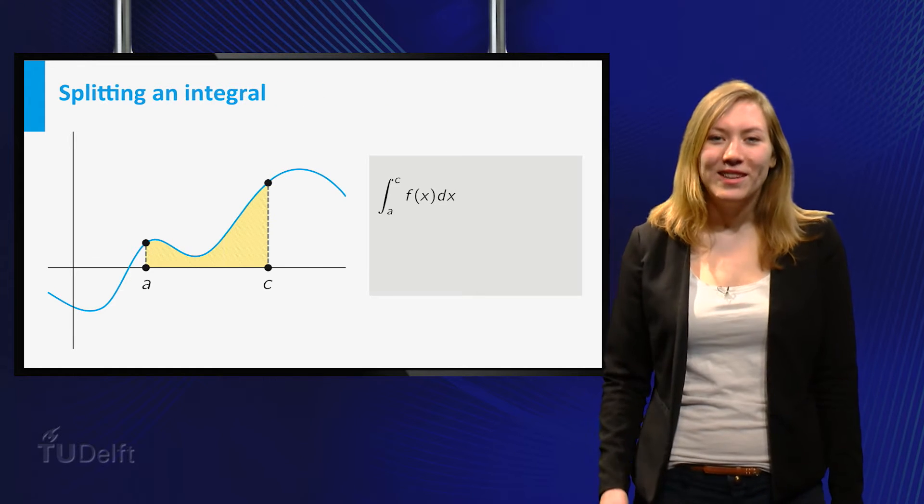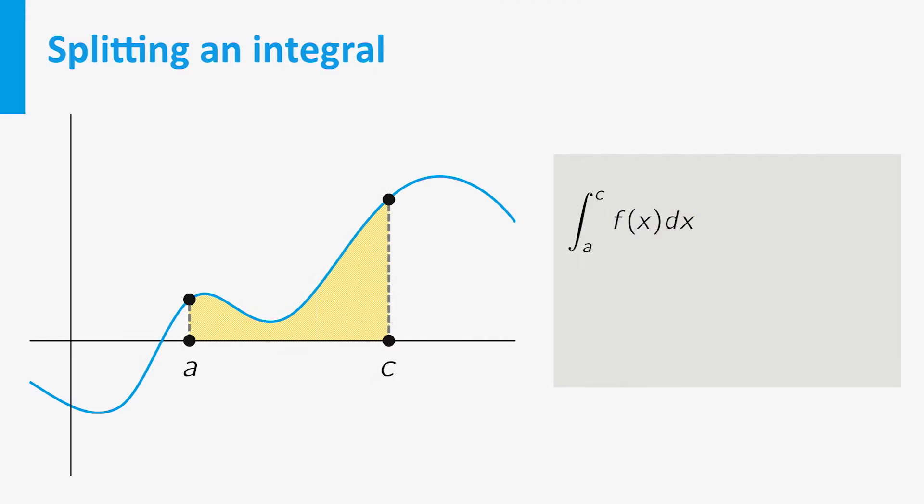The second property is a really useful one. Imagine you want to calculate the integral of a function f from a to c. Then I can take a point b somewhere in between a and c and split the region. So we get the integral of f from a to b and add that to the integral of f from b to c.